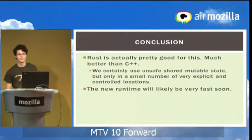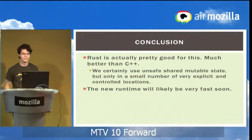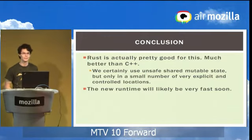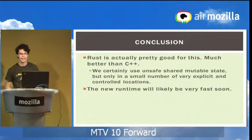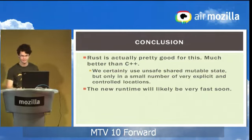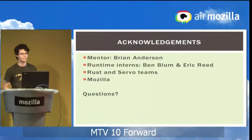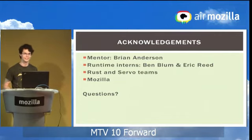That's about all I have. In conclusion, Rust was actually a really nice language to use for this. Normally we'd use something like C or C++ for writing this kind of code, but Rust is great. The memory safety that Rust gives you is actually really useful, even though you do need shared mutable state in the implementation of a runtime, because it forces you to really think about when you do it and make it very explicit what you're doing. We're hoping the new runtime will catch up on message passing pretty soon and be pretty fast. I'll thank my mentor, Brian Anderson, and the rest of the runtime interns on the Rust and Servo teams at Mozilla.